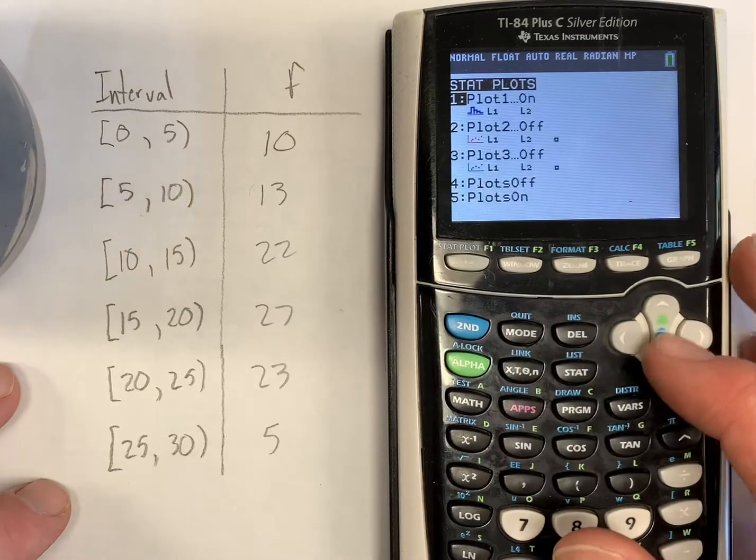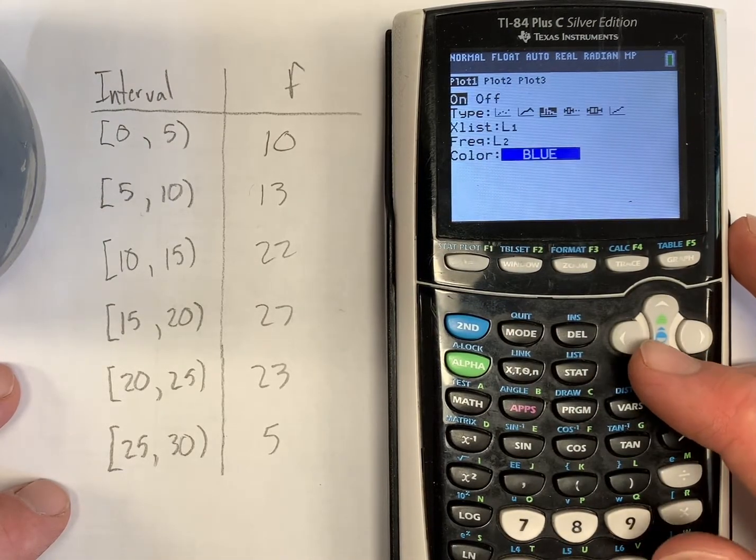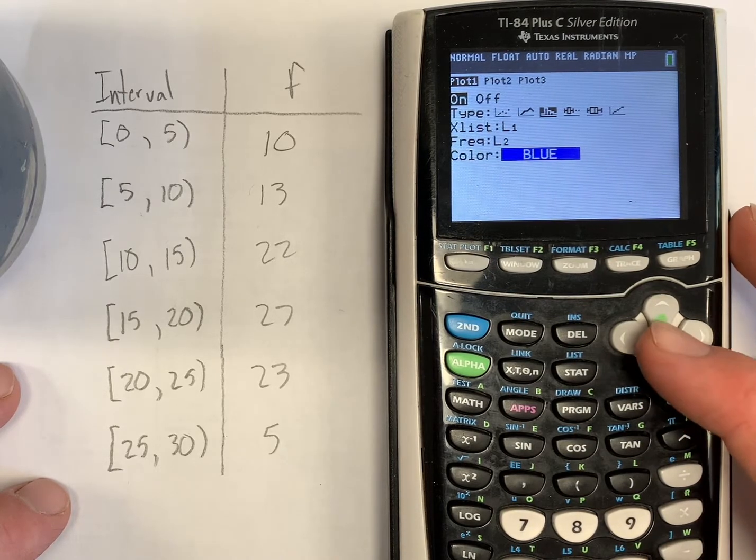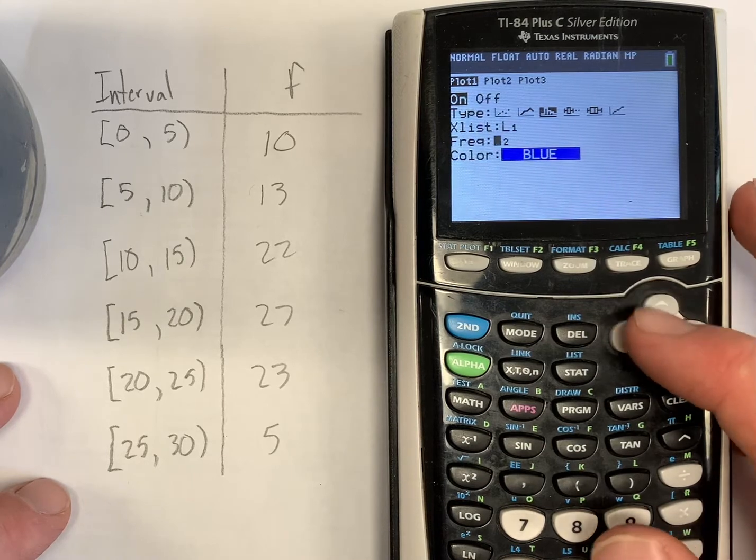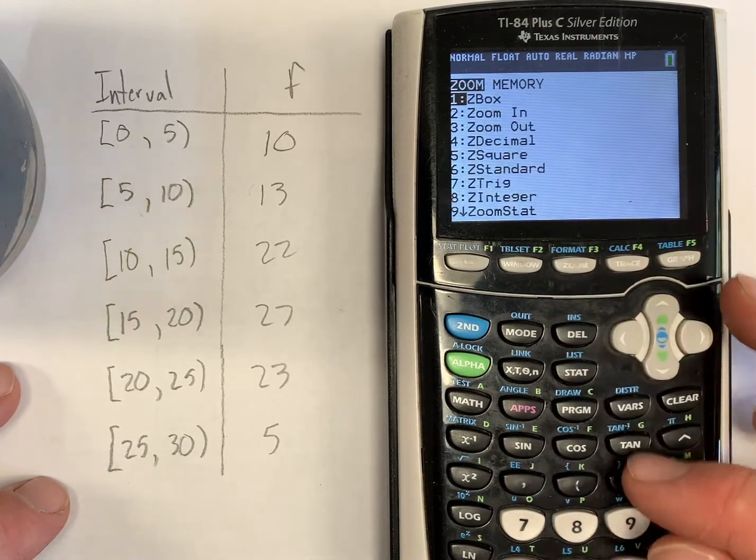And we'll go plot one on. And we'll just make sure we've got our x list is L1 and our frequency list is L2. And we're all ready to go. So I'm going to press zoom and stat once again.